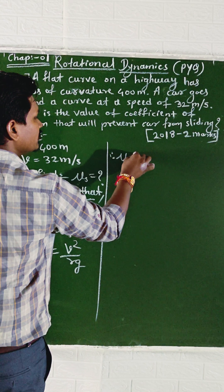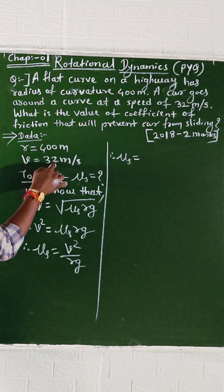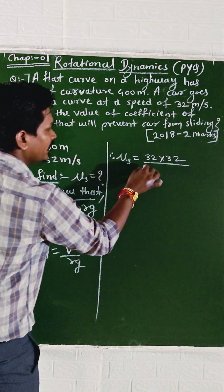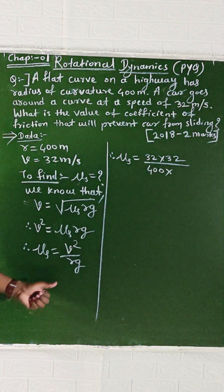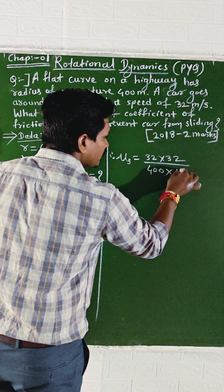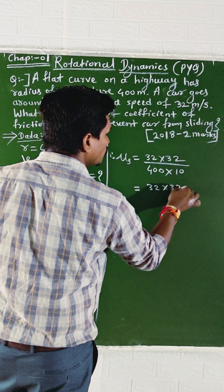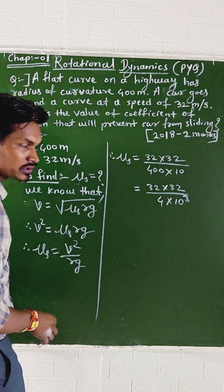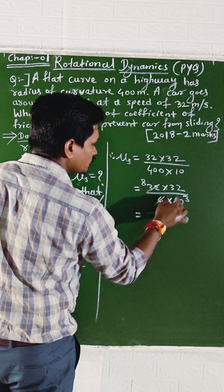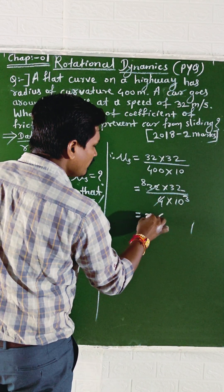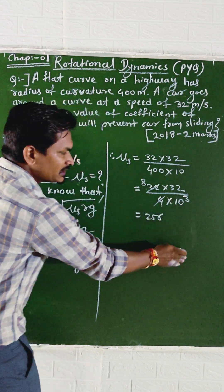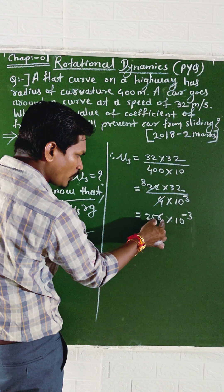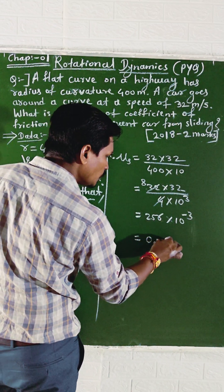Substituting V equals 32: mu equals 32 squared divided by R times G, which is 1024 divided by 400 times 10, equals 0.256.